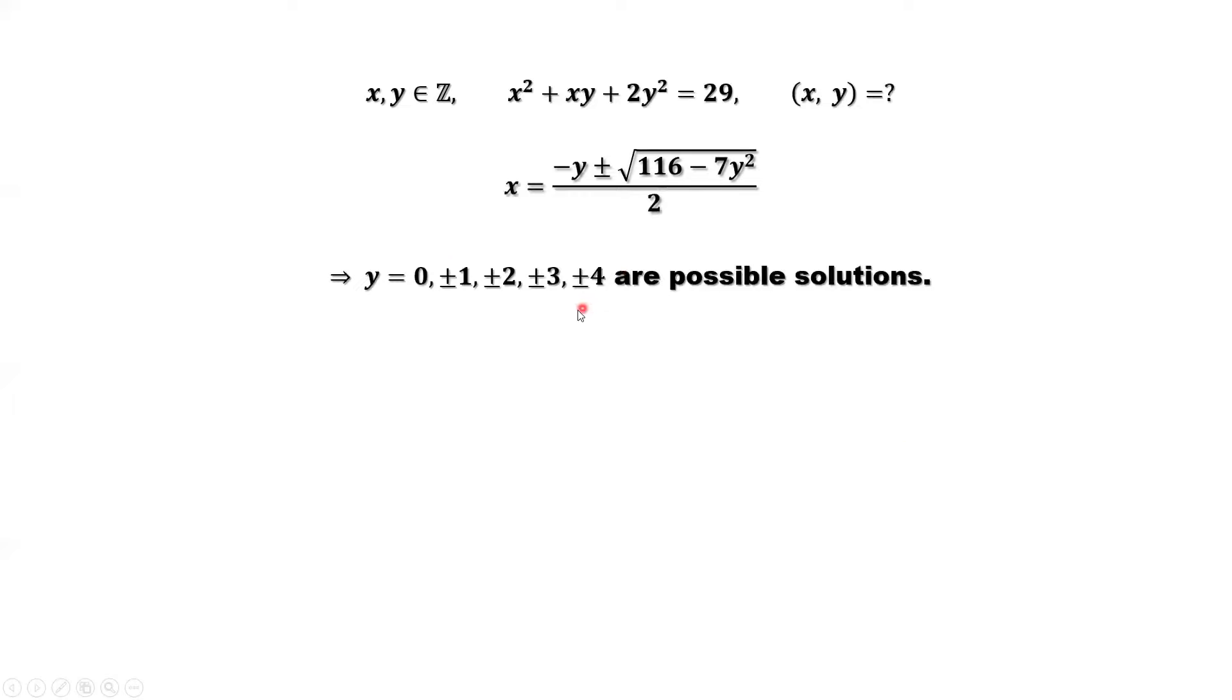We can check one by one because the biggest number is 116. We don't have much to check. We only need to check 1², 2², 3², up to 10². Plug in y values. Since it's y², we can ignore the sign, just replace y by 0, 1, 2, 3, 4. Now we can check. y equals ±4 is the only answer to make this a perfect square.